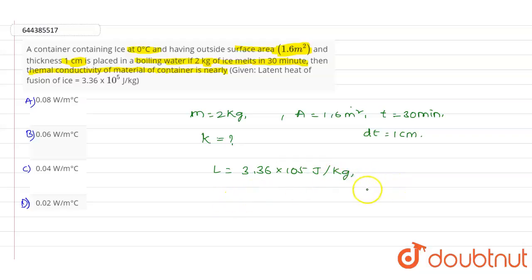So here dQ value, dQ is nothing but differentiation of the charge, dQ will be equals to m into L. So dQ value can be written as 2 into 3.36 into 10 power 5 joules. So this is the dQ value.